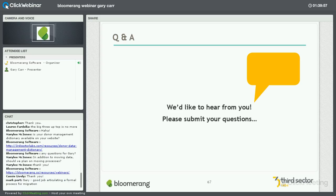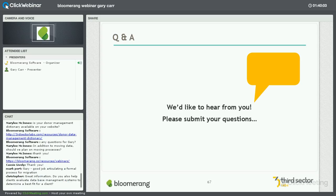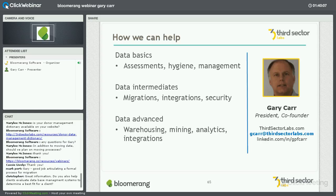Gary, it looks like we're about out of time. How can people get in touch with you? My email is gcawn at thirdsectorlabs.com. Please feel free to shoot me an email. If folks want to call me, my phone number is 571-242-2313. Third Sector does really great work, and they've also got a great blog and a newsletter you can check out for more data tips.